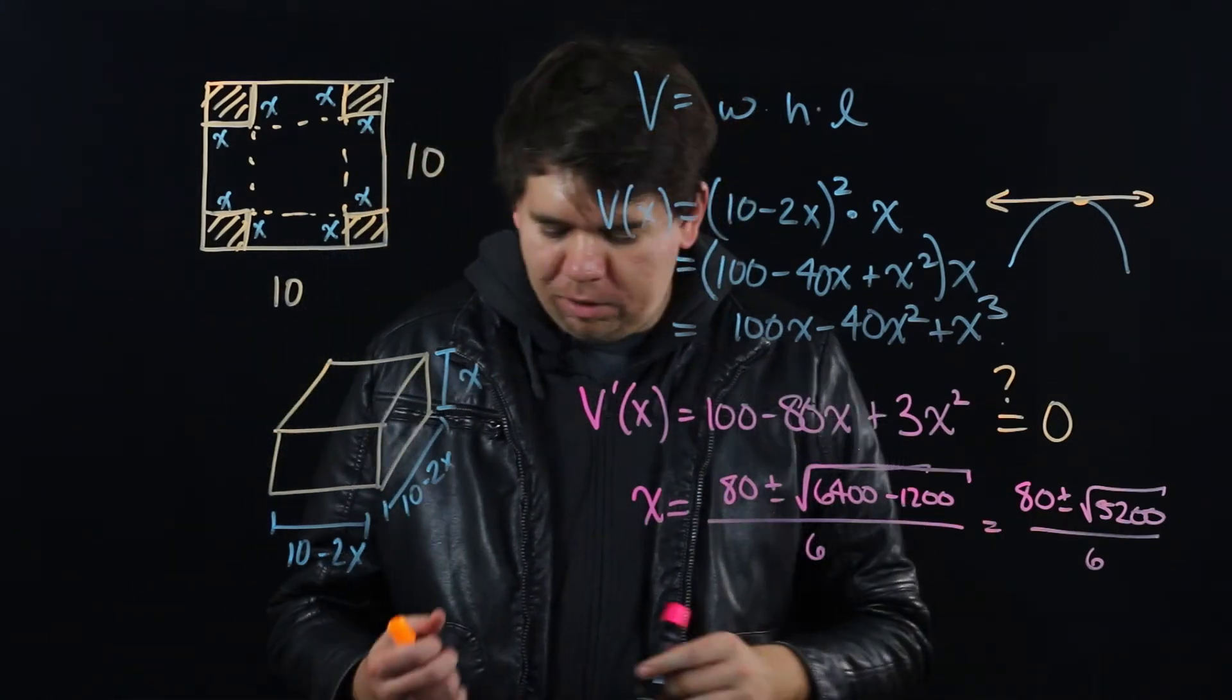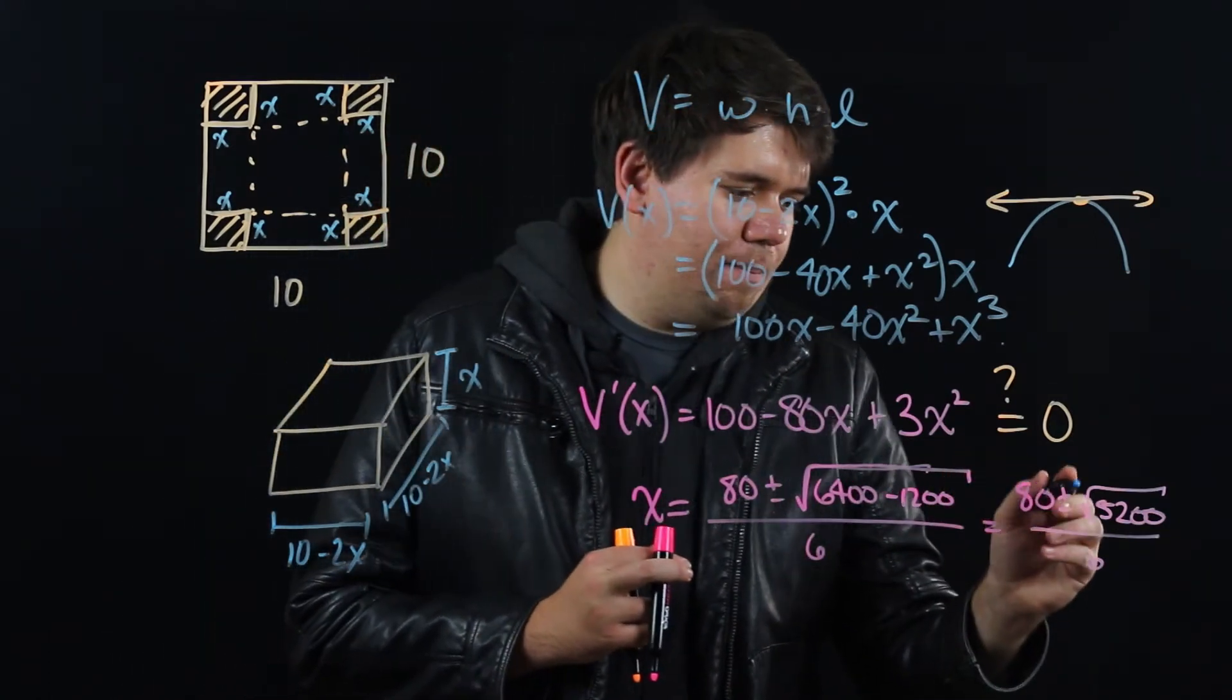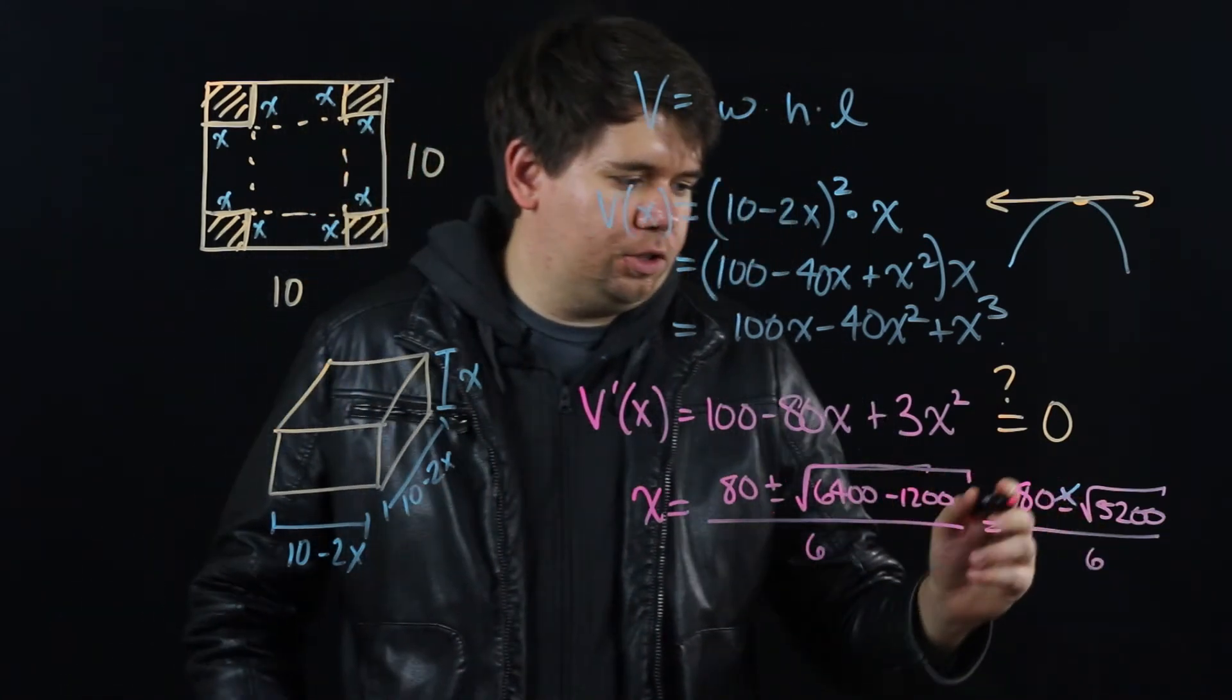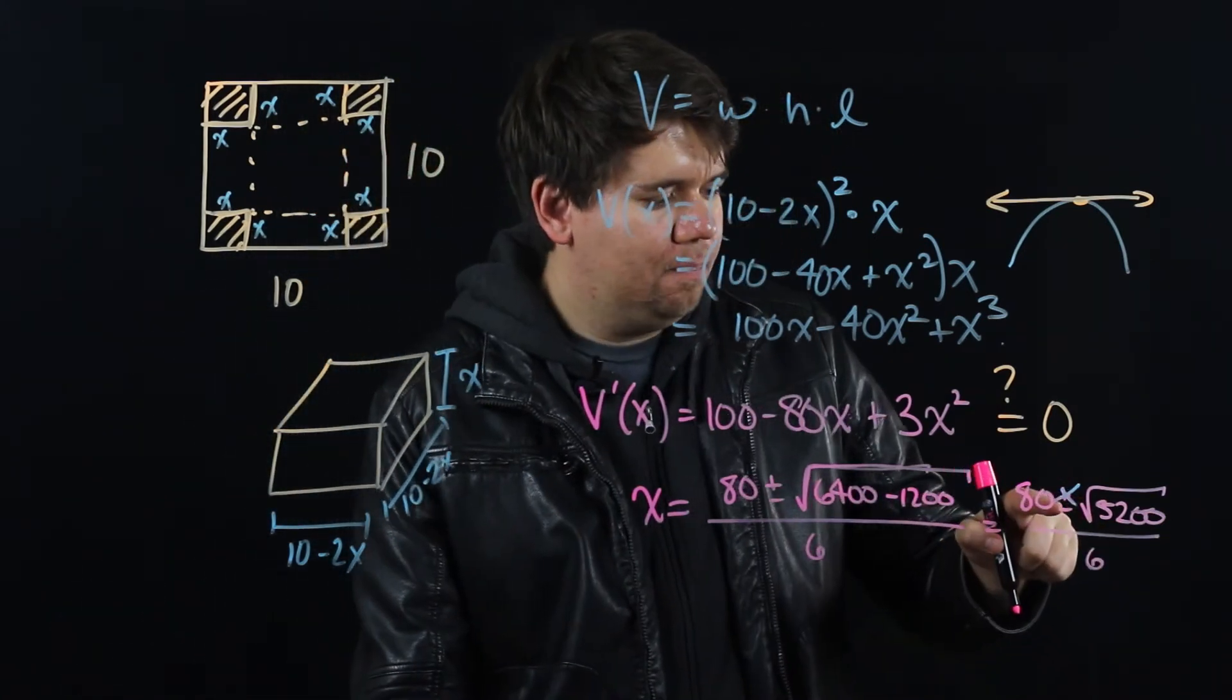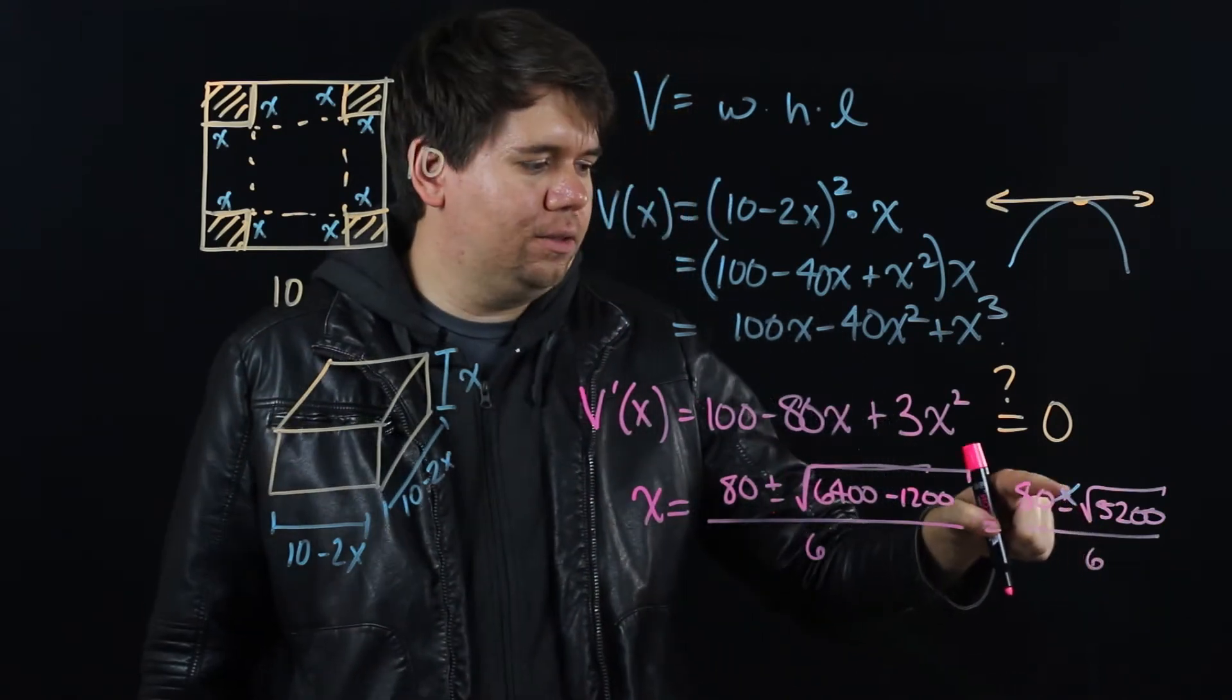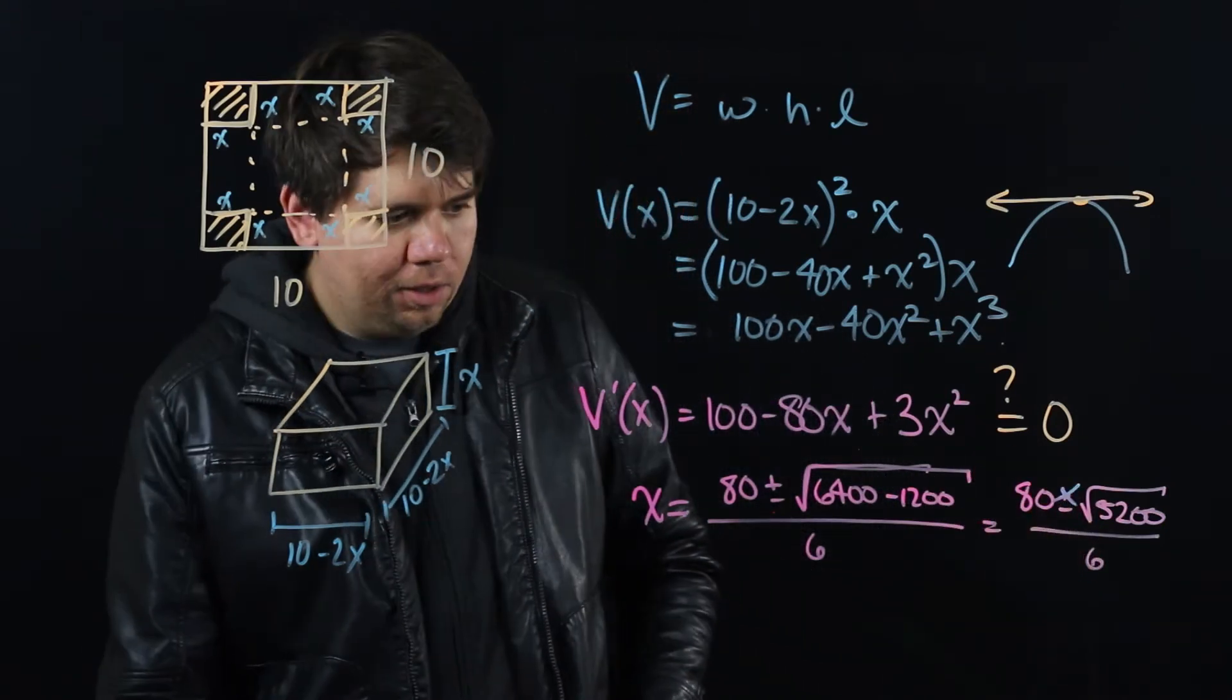So there's no way that the plus is going to be the solution. So you can throw out one of those solutions as being extraneous, as not making sense in the context of this problem, giving you really just one solution. 80 minus the square root of 5200 all over 6.